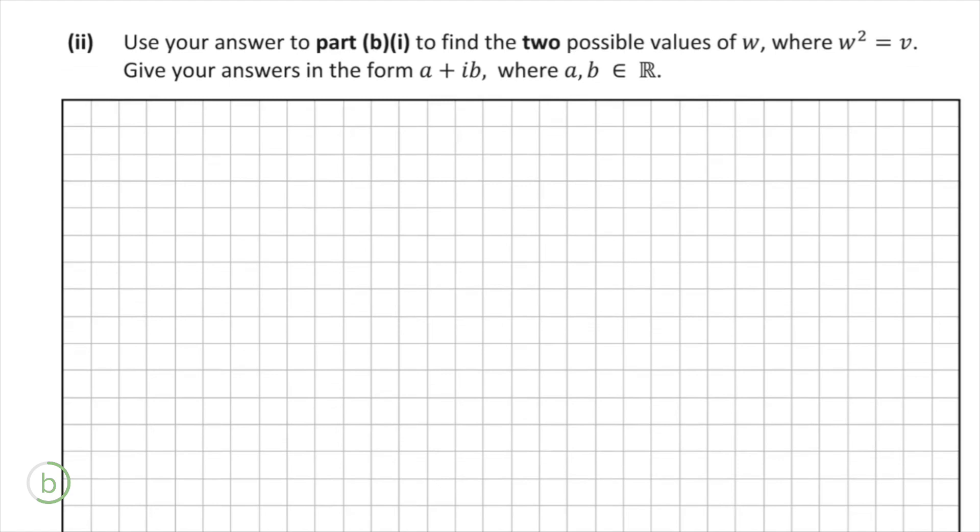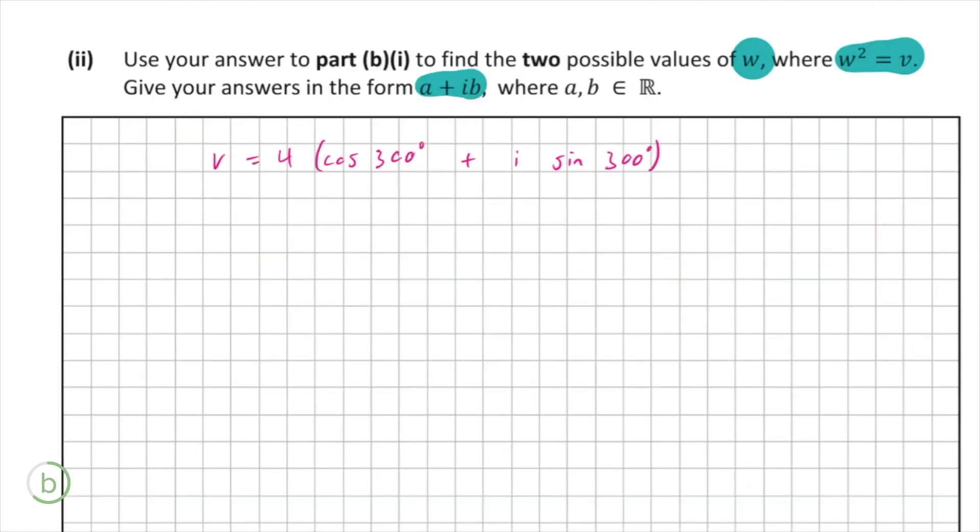And b part 2 asks us to use our answer above to find two possible values of w, where w squared is equal to v. We've got to give our answers in the form a plus ib, where a and b are real numbers. So they're asking us to use this, so we're just going to rewrite that. So we have v in polar form and we also know that v is equal to w squared, which means that w is equal to the square root of v, or v to the power of a half. But the trick here is to realize that because they're looking for two possible values, we're actually going to have plus or minus v to the power of a half. So we do this in order to find both possible values, as opposed to just a positive one.